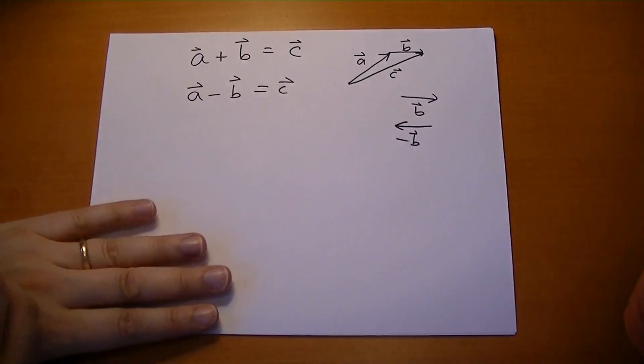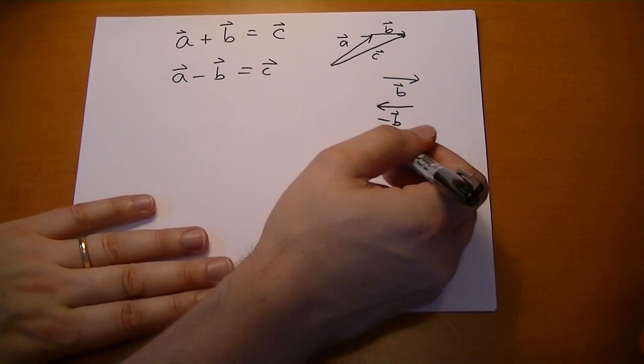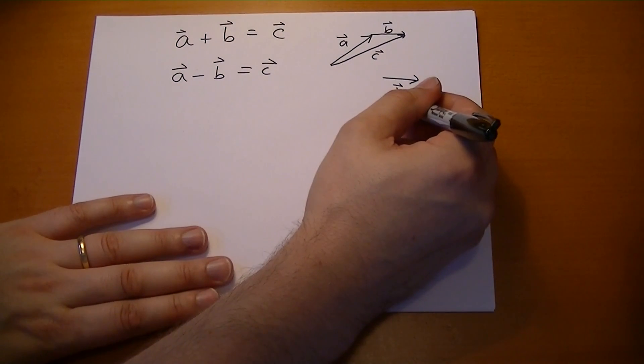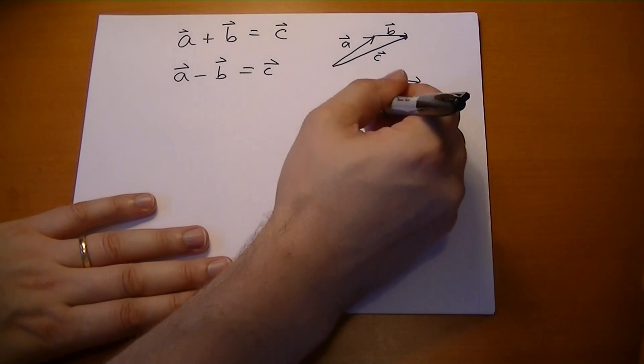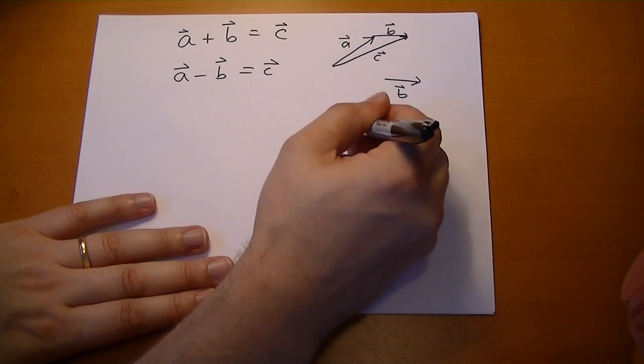So negative B vector points the opposite direction. So if you add A vector plus negative B vector, let's try to draw an A vector again. This is A vector minus B vector.